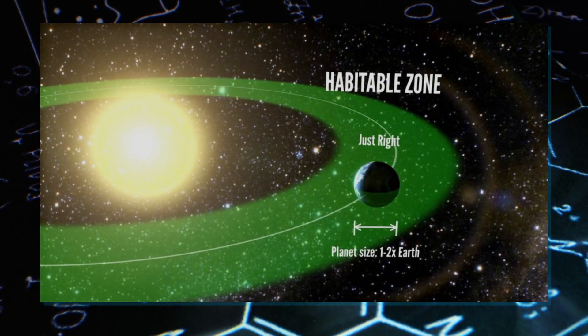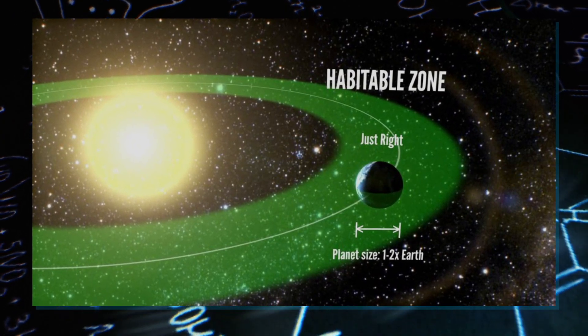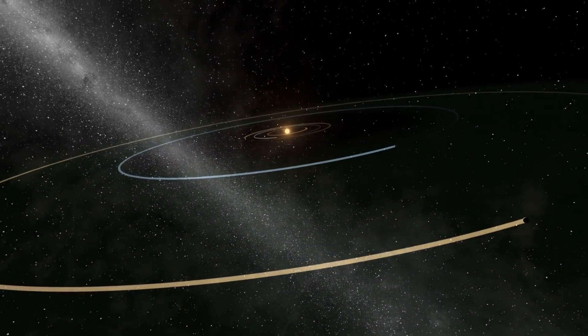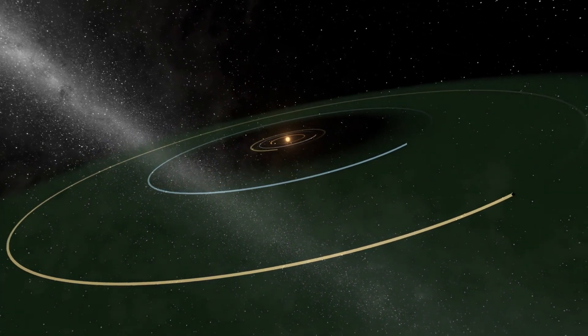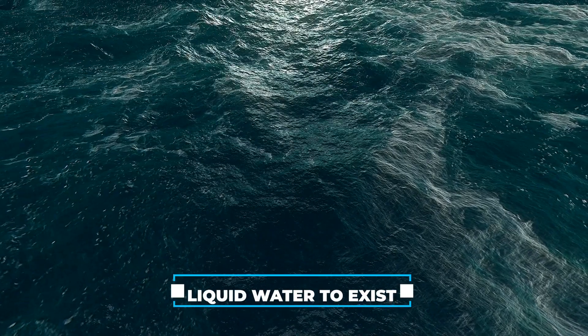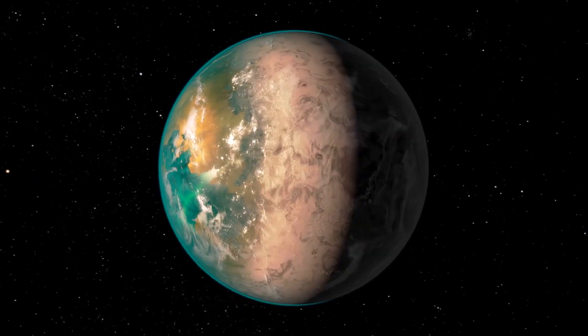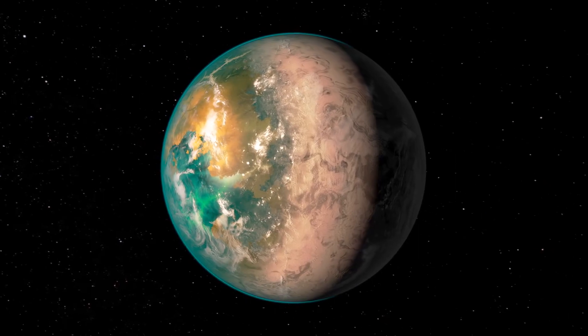That's why scientists focus on the Goldilocks zone, the region where it's not too hot and not too cold, but just right. In this zone, planets are at the perfect distance from their star, which allows liquid water to exist. Because wherever we find liquid water on Earth, we find life.